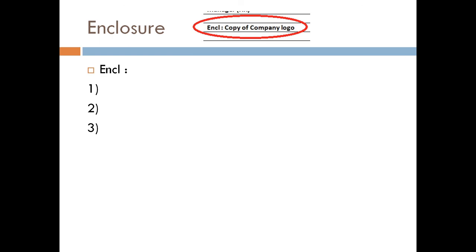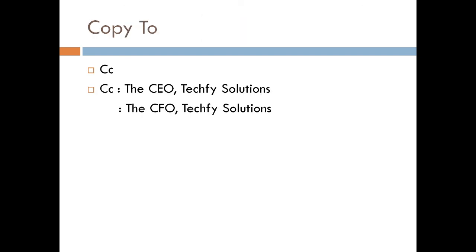If there are more documents, they should be numbered in the order in which they are attached to the letter. The last part of a business letter is 'Copy' — the details of copies of the letter sent to other recipients will be mentioned here.